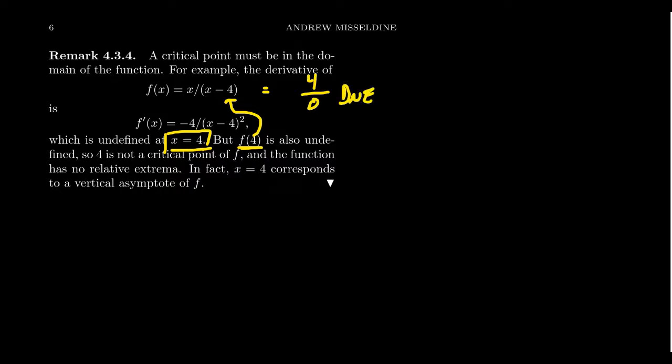The original function is not defined at x = 4. So technically speaking, x = 4 is not a critical number because it's not a point in the domain of the original function.